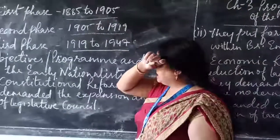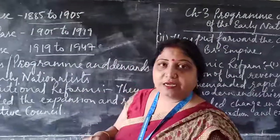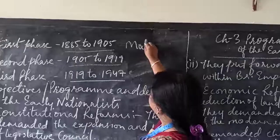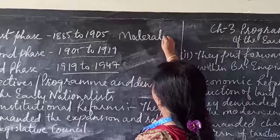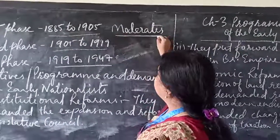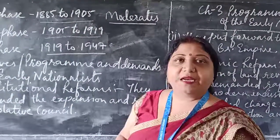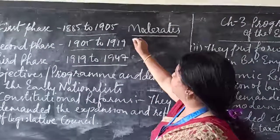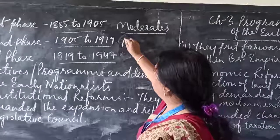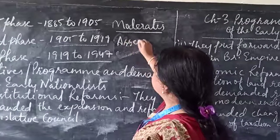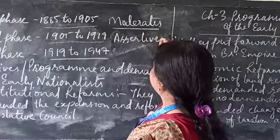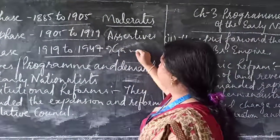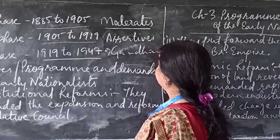In the first phase, the Indian National Congress was dominated by moderates. In the second phase, Indian National Congress was dominated by assertives. And the third phase is known as the Gandhian era.